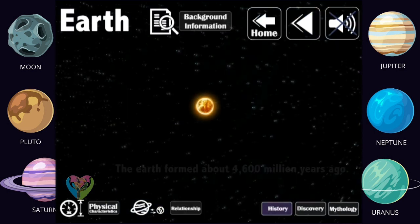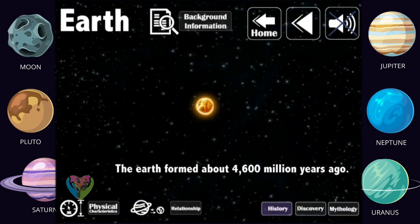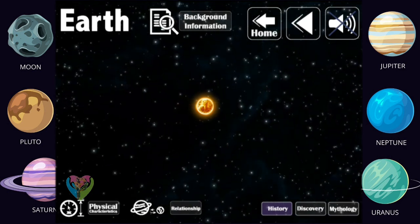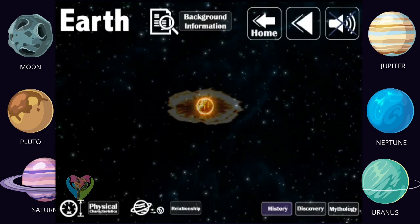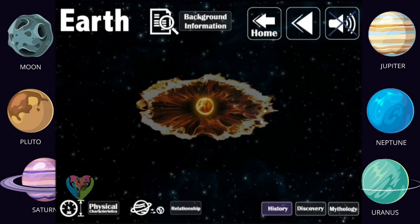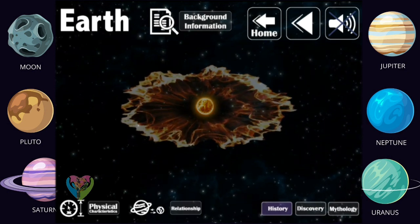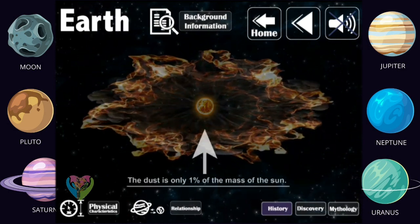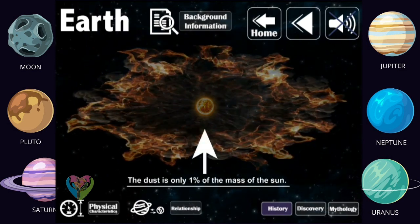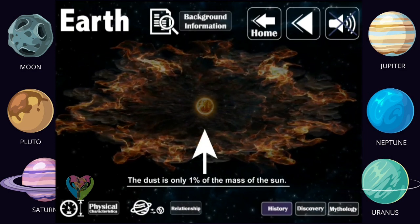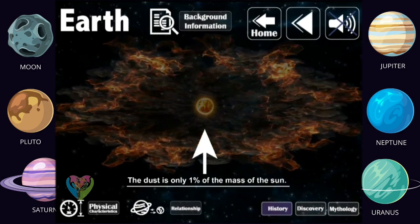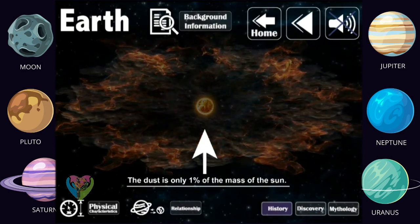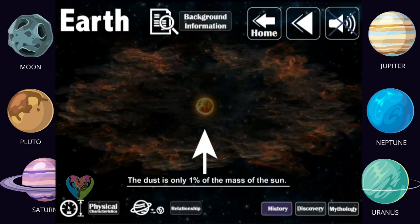The Earth formed about 4,600 million years ago from the explosion of the Sun. At the beginning, it broke out from the Sun into the dust. But due to the gravitational pull of the Sun, the dust floated around the Sun. The dust is only 1% of the mass of the Sun. Over hundreds and millions of years, the dust began to form together into eight spherical-shaped planets.